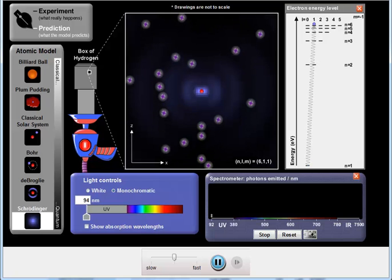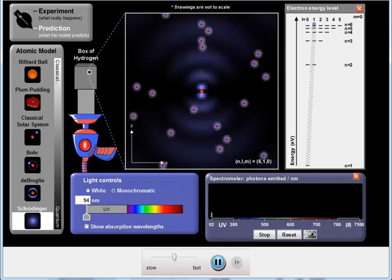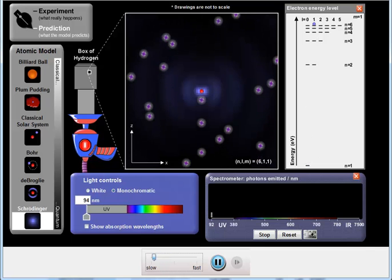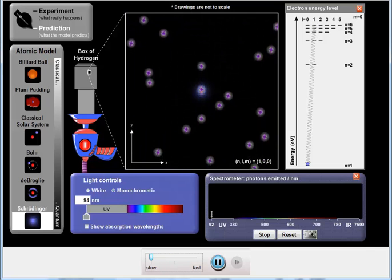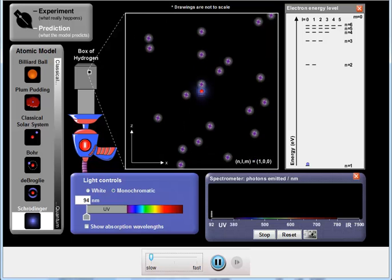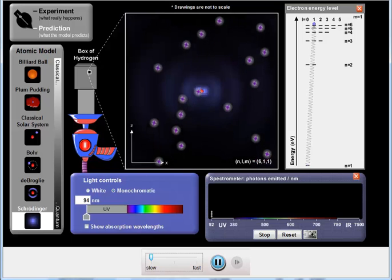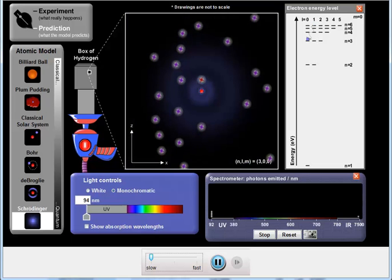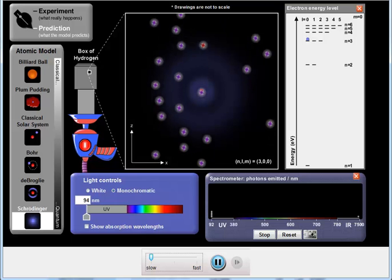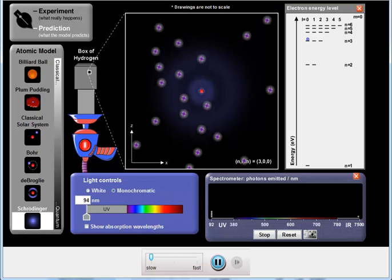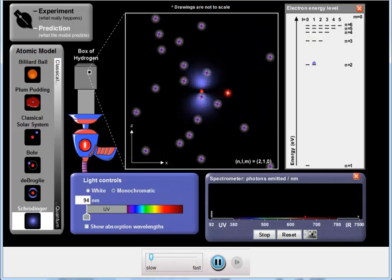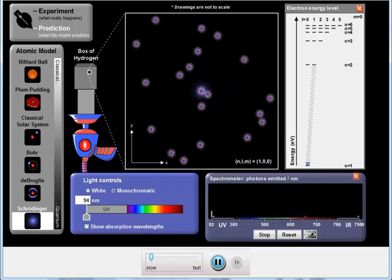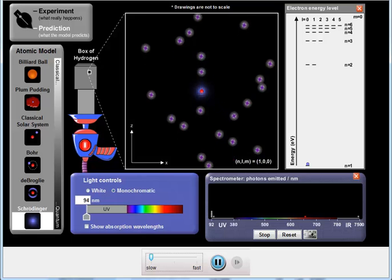You'll notice that there are all sorts of different shaped orbitals happening there. If we slow it down a little bit, you might be able to recognize some of the shapes from pictures that you've seen in the textbook. And you can see up here now, we not only have the values for n, but we also have the values for l. When l equals 0, these are s-orbitals, and they are spherically symmetrical.